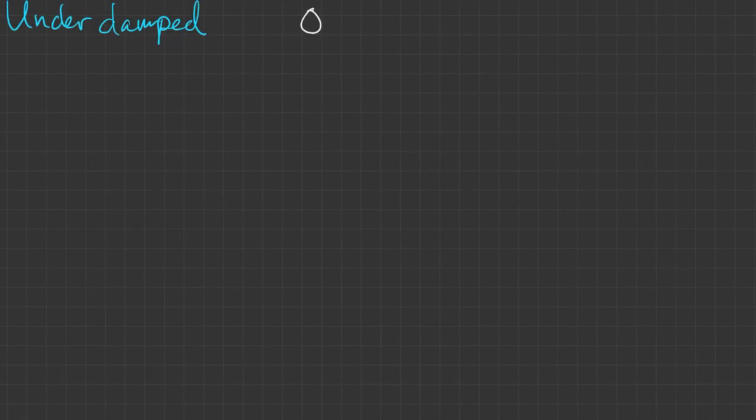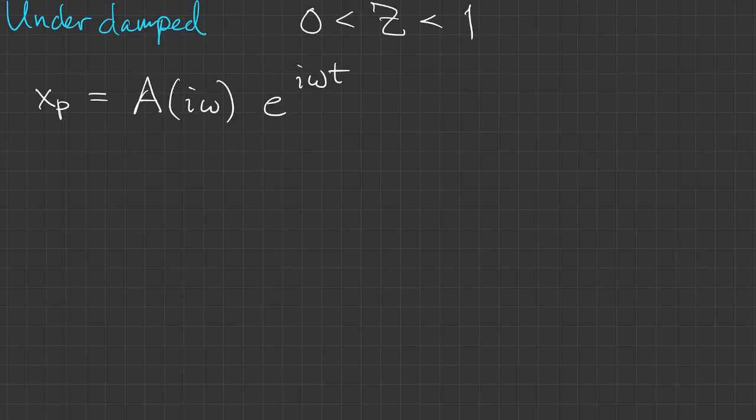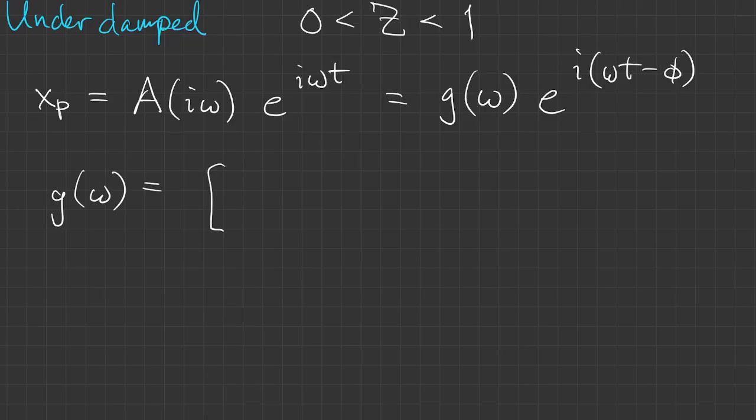In the underdamped case, where there is some damping present, the formulas are more complicated. Mostly we're concerned with the gain. What's the amplitude of the particular response? Using the complex modulus from the formula before, we can write it out. It's kind of a long expression.